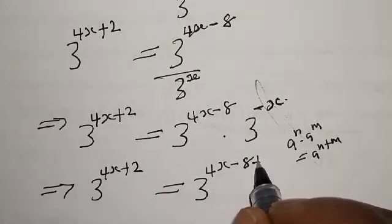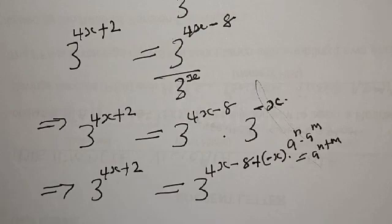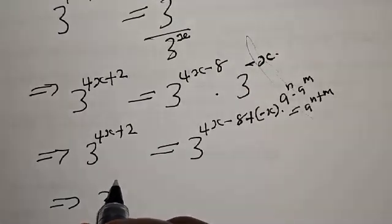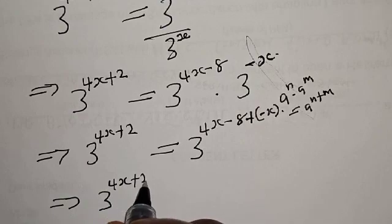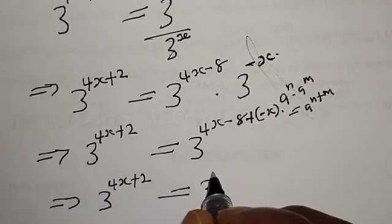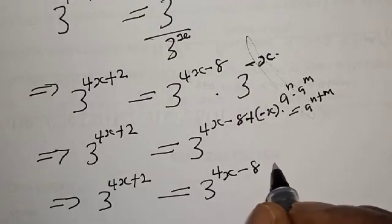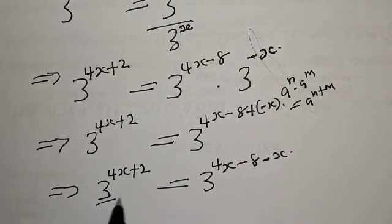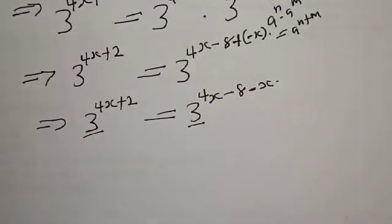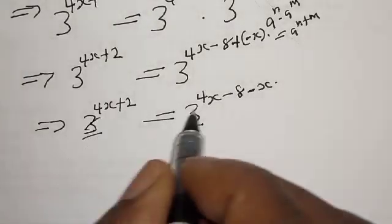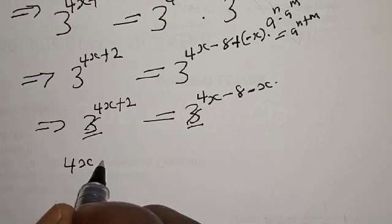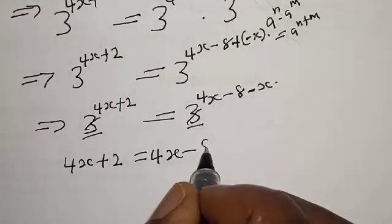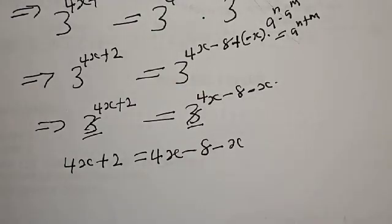This implies that we have 3 raised to power 4X plus 2, to be equal to 3 raised to power 4X minus 8 minus X. Now they have the same base. Since they have the same base, the bases cancel, and we have 4X plus 2 equal to 4X minus 8 minus X. That is our linear equation.